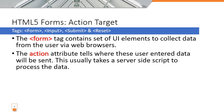The action attribute usually takes a server-side script to process the data. In the action attribute we specify a web URL to any server-side scripting — it can be ASP code or JSP code. Those scripts run on the server and are specified here in the action attribute.